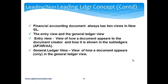The financial accounting document always has two views in New GL: the entry view and the general ledger view. The entry view is the view of how a document appears to the document creator and how it is shown in the sub-ledgers, namely accounts payable, accounts receivable, and asset accounting. The general ledger view is the view of how a document appears only in the general ledger.